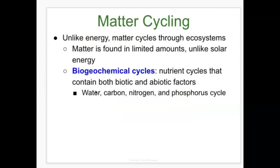Unlike energy, matter cycles through ecosystems. Matter is found in limited amounts, unlike solar energy. Matter cycles through biogeochemical cycles — meaning chemicals cycle through both biotic (living) and abiotic (non-living, earthly) components. The best examples of matter cycling involve water, carbon, nitrogen, and phosphorus cycles.